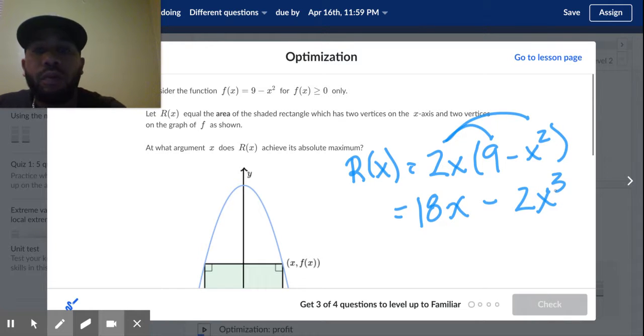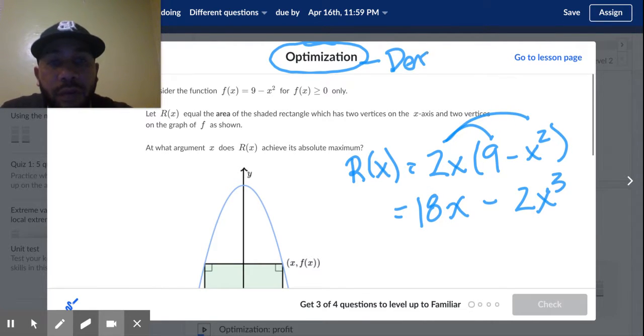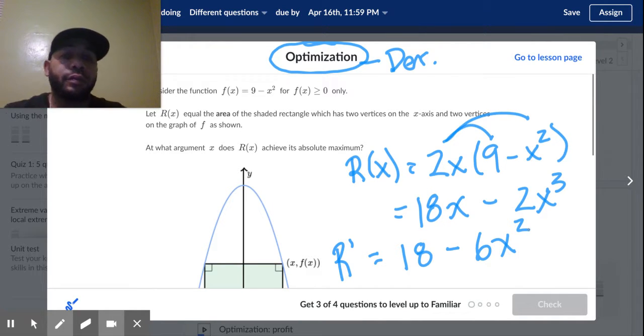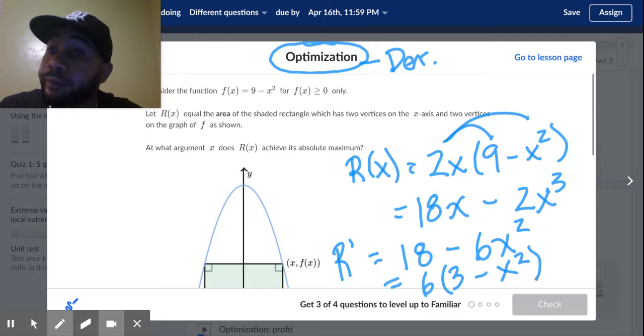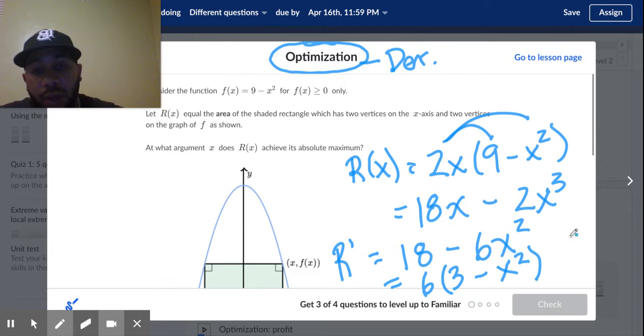Now remember, optimization, optimizing profit, that's going to be a direct clue that we're doing the derivative and not the antiderivative. So I want to know R prime. And R prime is going to be equal to 18 minus 6x squared. Now we can go ahead and factor that out. We factor a little six out. We got 6 times (3 minus x squared). So now let's scroll down.